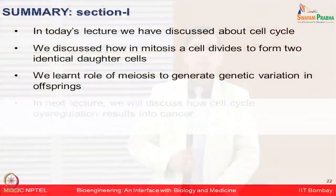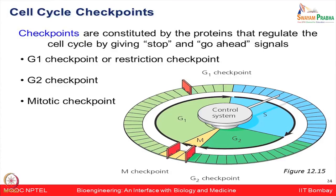To summarize the first part of the lecture: we have understood the cell cycle broadly — the small mitotic phase and how cells divide to form two identical daughter cells — and how meiosis generates genetic variability in offspring. Now we will continue with cell cycle regulation, dysregulation, and how diseases like cancer may occur. Let us look at cell cycle checkpoints.